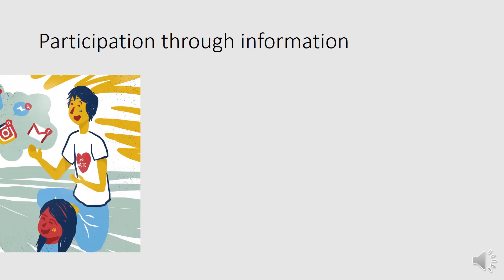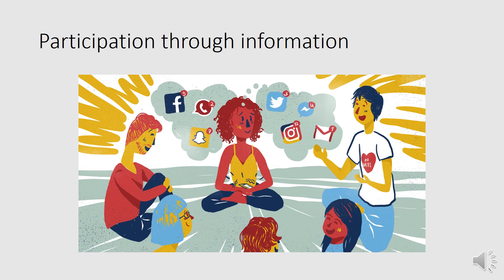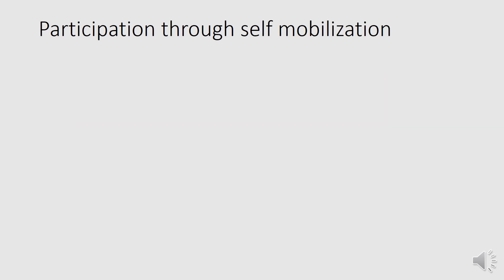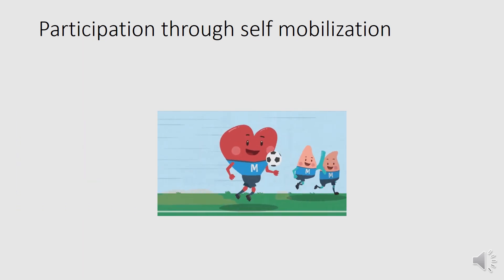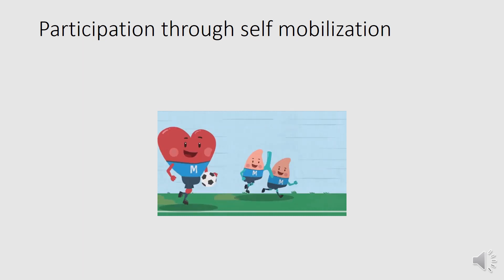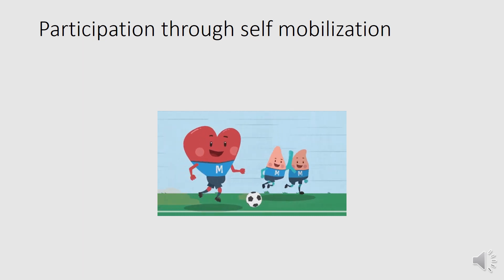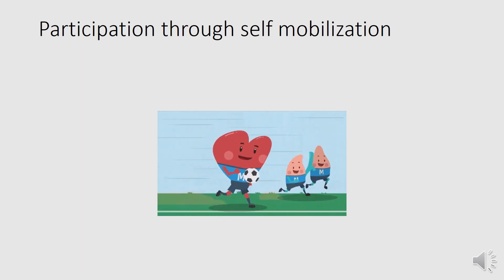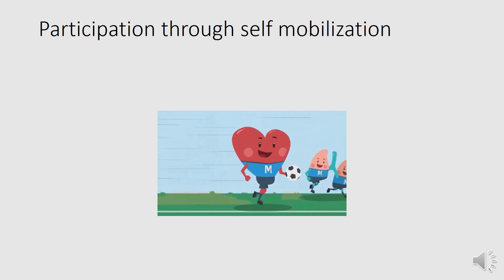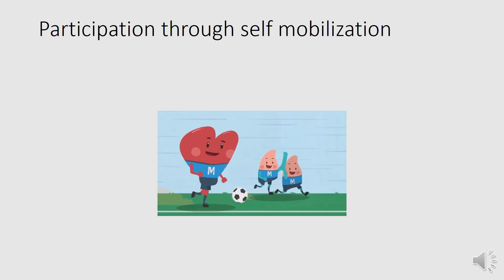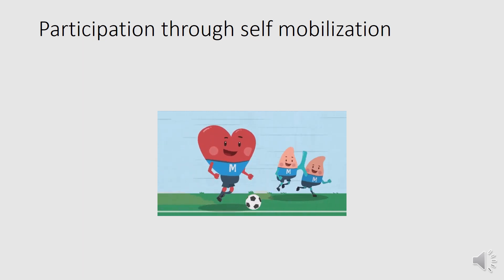Fourth is participation through information giving — the community is asked questions about situations or needs. Fifth is participation through self-mobilization — the community works together to demand and implement things. The community may develop contacts and technical skills, and retains control over how resources are used.